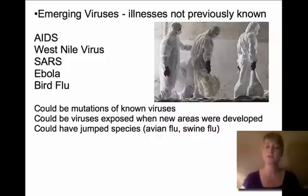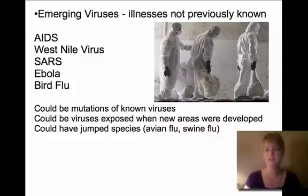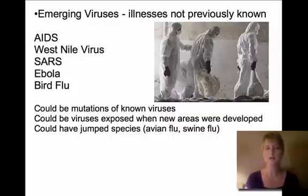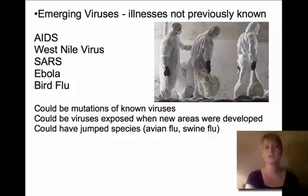New viruses can also emerge when we develop in a brand new area never really seen by humans before. A virus could be living in a host in that area, and when people move in, they're exposed to it — it's new to us but may have been there a while, living in local animals. Also, a virus can jump species. A virus known to infect birds or pigs might not normally move to humans, but if a mutation allows it to cross between species, suddenly we're struck by a virus that used to only be in that animal.